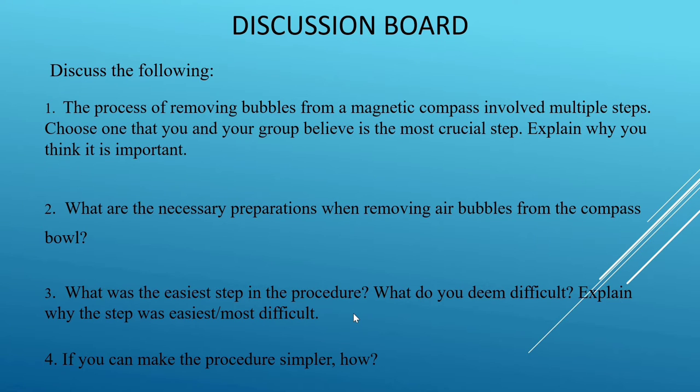For us, we believe that the most crucial step in removing bubbles from a magnetic compass is filling the compass with fluid using a syringe through the hole and making sure that there are no bubbles. This is because a magnetic compass is a compulsory part of the bridge and additional equipment. An appearance of a bubble in a magnetic compass means that some of the liquid has somehow escaped the bowl. This is a rare occurrence and must be remedied immediately.